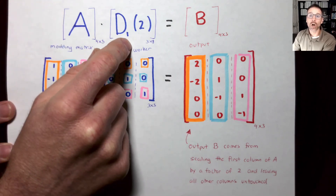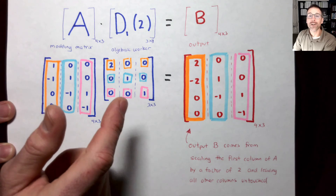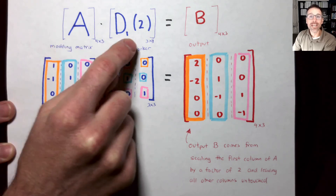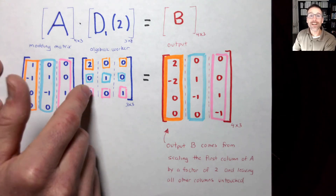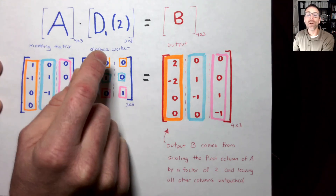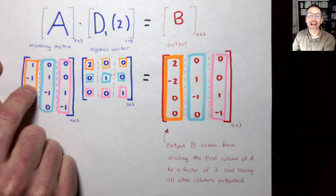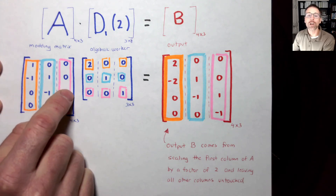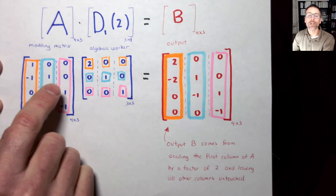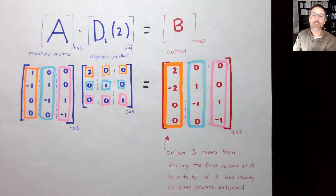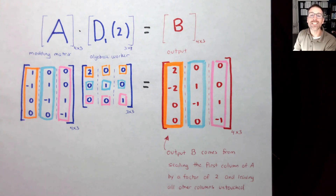This one doubled column 1. Could you guess what would happen if we wanted to quadruple column 3? What matrix would we use? That leads nicely into the community challenge: what if we wanted to multiply column 1 by one-half, column 2 by 5, and column 3 by 7? How could you change the algebraic worker to accomplish that? In the next video, we'll see how we can swap columns around using the same idea of matrix-matrix multiplication via linear combination of column vectors.